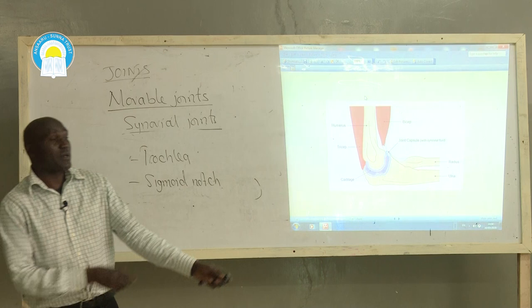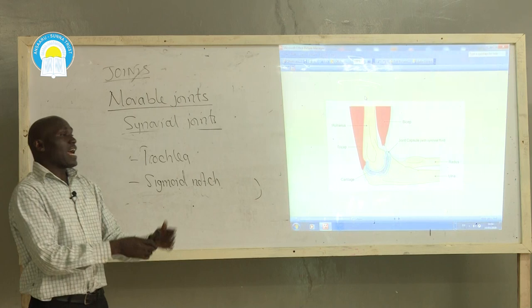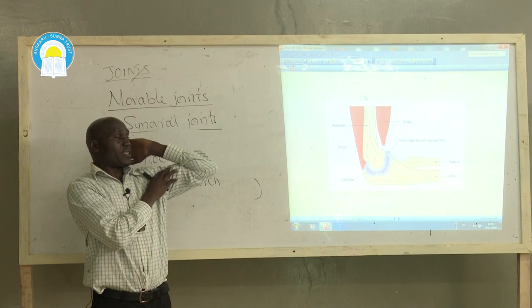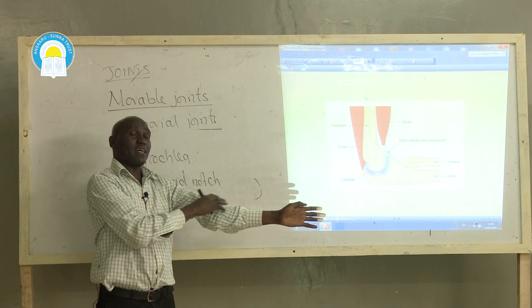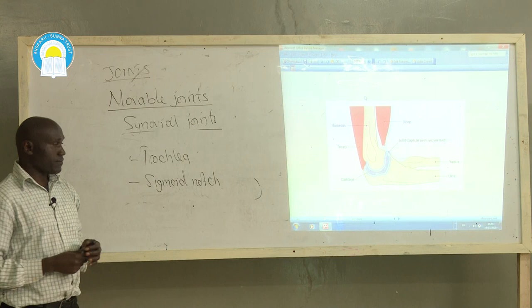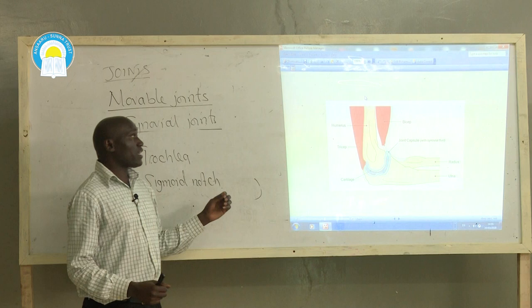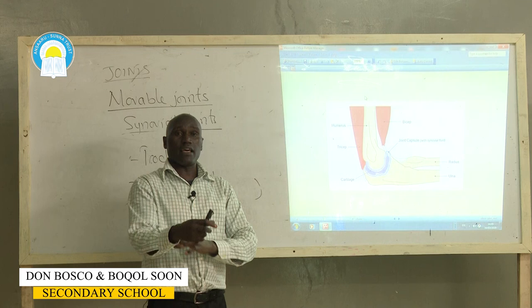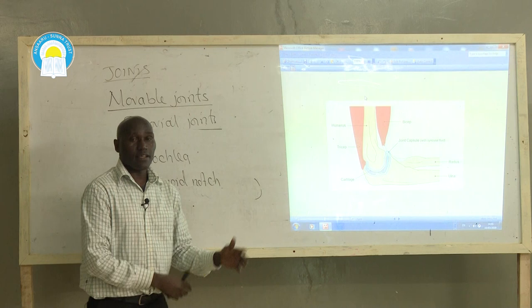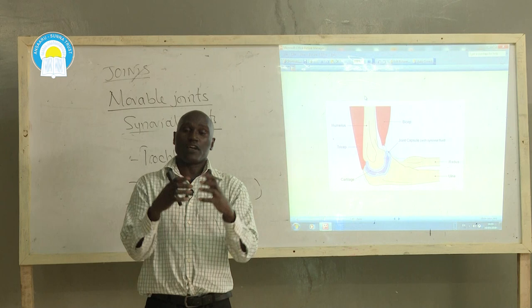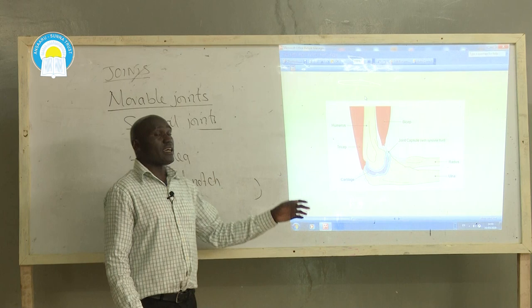This joint can only move in one particular direction, up to 180 degrees. The advantage of a hinge joint over a ball and socket joint is that hinge joints can bear heavy weights without dislocation. So we have hinge joints at the elbows between humerus, radius, and ulna, and also between the phalanges — the bones that form the fingers and toes.